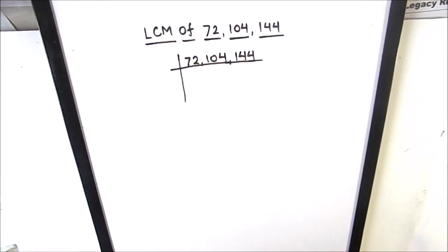Hello students. In this video we are going to learn how to find the LCM of 72, 104 and 144 using the prime factorization method. In this method we divide numbers using prime numbers and find the factors of the number. To find the LCM we will take the product of all the common factors of the number.